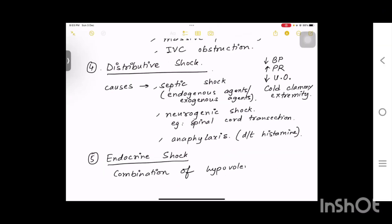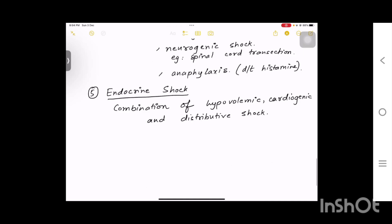The fourth kind of shock is distributive shock. What are the causes? One is sepsis. It can also be neurogenic shock like spinal cord transaction, and it can be anaphylaxis due to histamine. These examples are very important: distributive shock is due to anaphylaxis, neurogenic shock, and septic shock with endogenous and exogenous conditions.